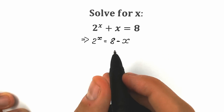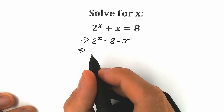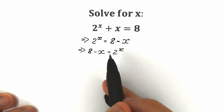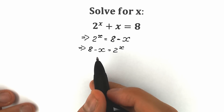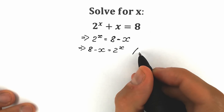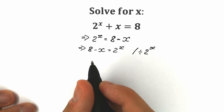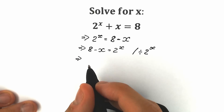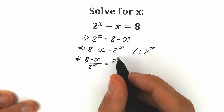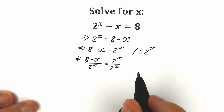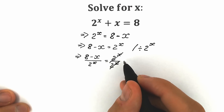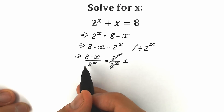Let's change position a little bit — we prefer this expression on the left side. So we have 8 minus x equal to 2 to the power x. Right now, let's try to group our variables on the left side and our constant on the right side. When we divide both sides by 2 to the power x, we get 8 minus x divided by 2 to the x on the left, and on the right side we have 2 to the x divided by 2 to the x, which cancels to give us 1.